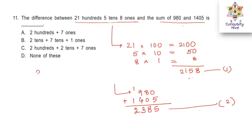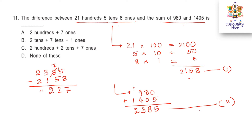We will subtract the smaller number 2158 from the bigger number 2385. 5 will borrow 1 from 8, making it 15. 15 minus 8 is 7. 7 minus 5 is 2. 3 minus 1 is 2 and 2 minus 2 is 0. So 227 is the answer, which is 2 hundreds, 2 tens and 7 ones. That is option C, the right answer.